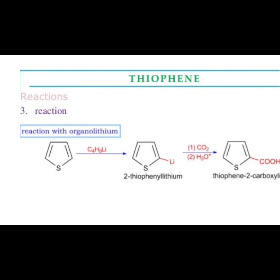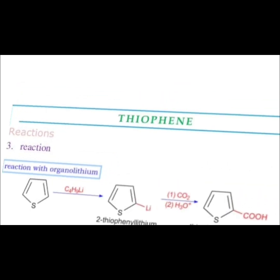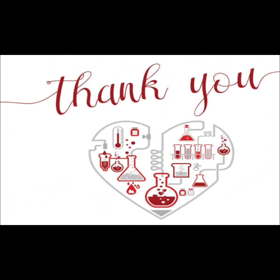Now see the reaction of thiophene with organolithium. Thiophene in the presence of n-butyllithium (C4H9Li) gives 2-thienyllithium. In the presence of carbon dioxide and H3O+, this gives thiophene-2-carboxylic acid as the product. Thank you so much.